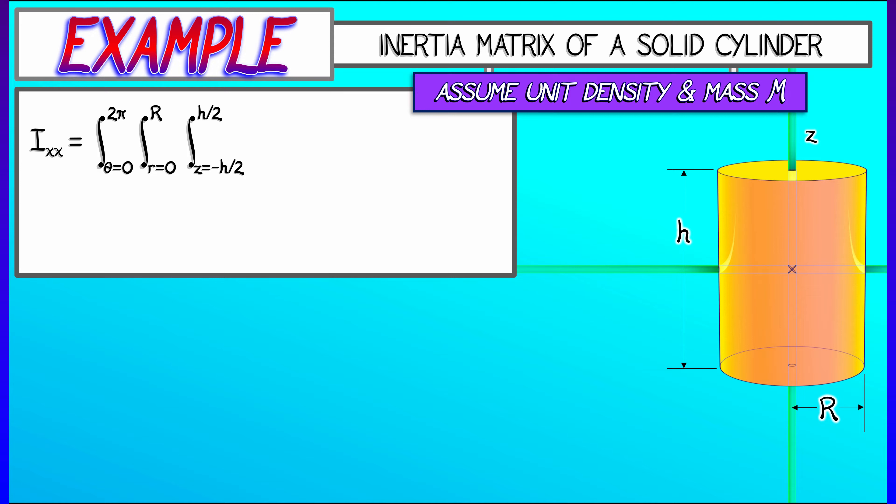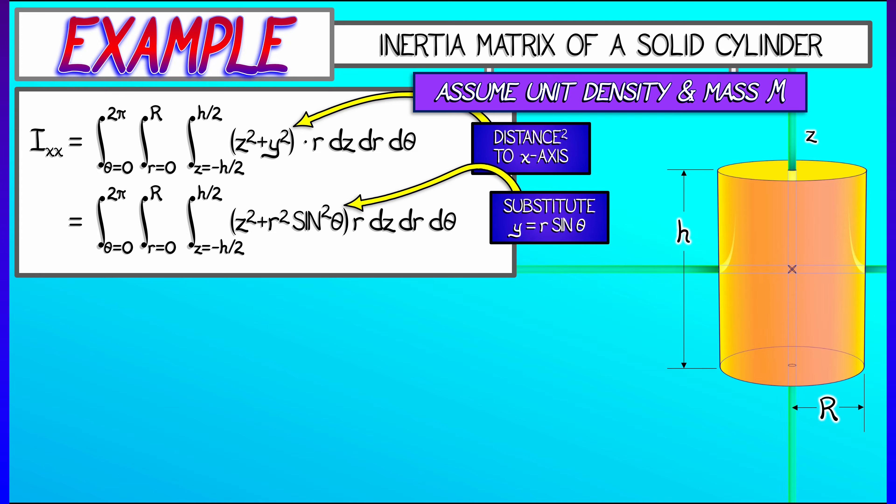The volume element that we have to use in cylindrical is going to be R dz dr d theta in this order. And then the integrand is the squared distance to the x-axis, which by Pythagoras is equal to z squared plus y squared. The z belongs, but the y does not. We need to convert that into cylindrical coordinates. Using what we know about polar coordinates, we substitute in y equals R sine theta. So what we're integrating is R times quantity z squared plus R squared sine squared theta.